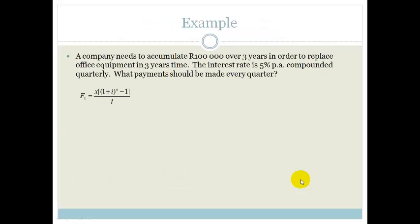The first example says a company needs to accumulate R100,000 over three years in order to replace the office equipment. The interest rate is 5% per annum, compounded quarterly. What payments must be made every quarter? We've got the formulas on the formula sheet. You just need to recognize that future value is equal to X times (1 + i)^n - 1 over i.